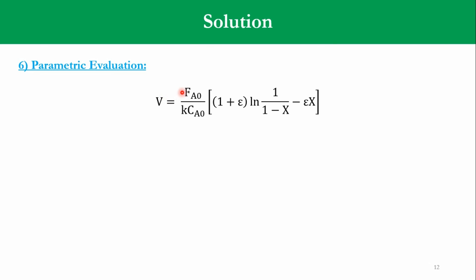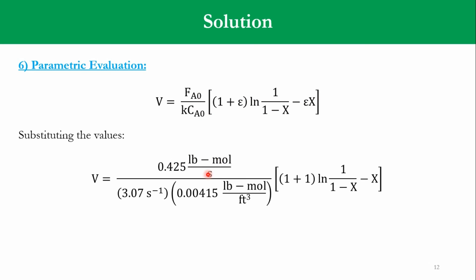So, going to this main equation, V is equal to FA0 over KCA0, 1 plus epsilon, natural log of 1 over 1 minus x minus epsilon x. So, FA0 is 0.425 pound mole per second, the value of K is 3.07 per second, CA0 is 0.00415 pound mole per cubic feet, 1 plus 1, obviously epsilon is 1. And, accordingly, we get V is equal to 33.362, natural log of 1 over 1 minus x minus x.